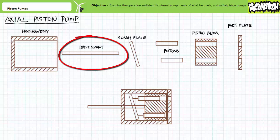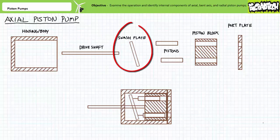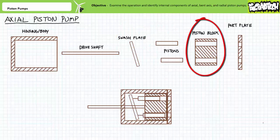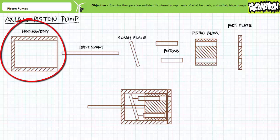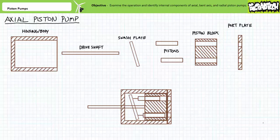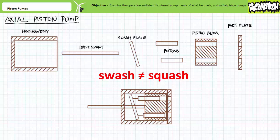An axial piston pump features a drive shaft to which an angled plate called a swash plate is affixed. Pistons are attached to the swash plate and the pistons are housed inside a piston block that is also fixed to the drive shaft. A housing or body encapsulates these parts and a port plate with an inlet and outlet port covers one end. Note: it's pronounced swash plate, not squash plate.